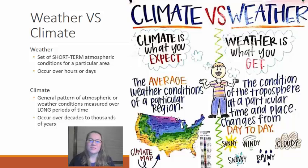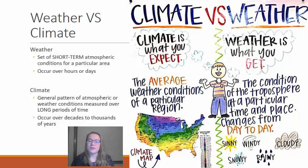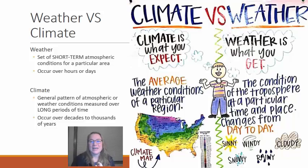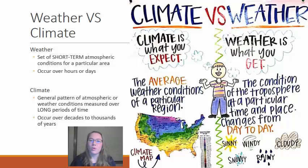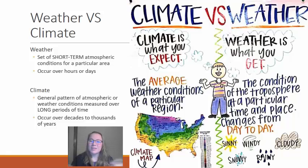Climate is kind of what you would expect to happen in December and January — you would expect it to be colder — and you would expect it to be warmer in July and August. Whereas weather is the day-to-day conditions where you might have 35 degrees and snowy one day in January and the next day the weather might be clear and sunny and 40 degrees. So weather is your day-to-day whereas climate is the long-term pattern that you would expect.